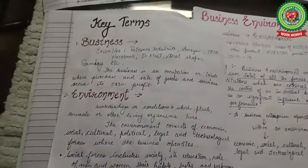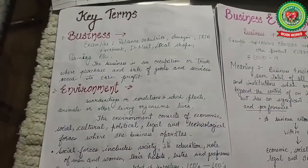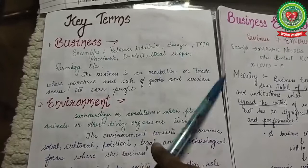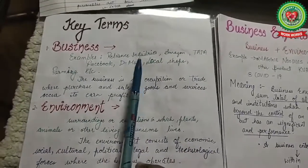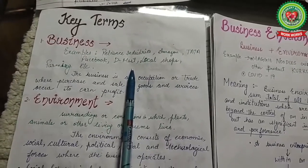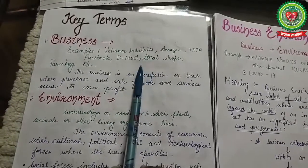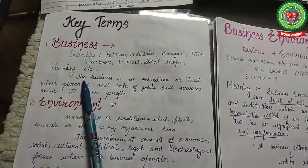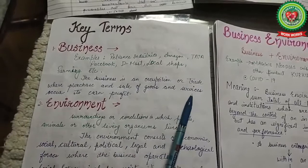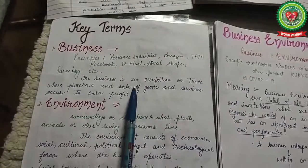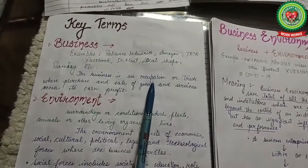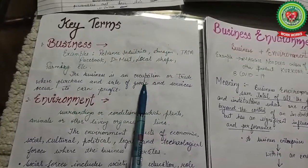Today we will discuss the concept, meaning and definition of business environment and some features. But before that, we will discuss some key terms. The first key term is 'business.' Examples include Reliance Industries, Amazon, Tata, Facebook, D-Mart, and even local shops or farming. A person who does their own work without following anyone else's instructions is said to be in business. Business is an occupation or trade where purchase and sale of goods and services occur to earn profit.